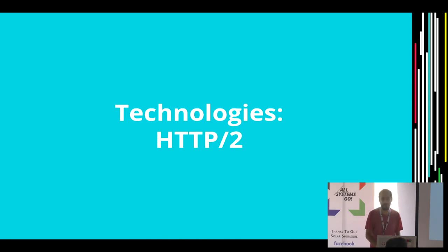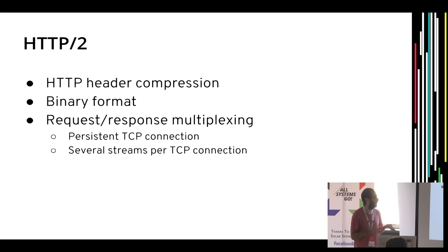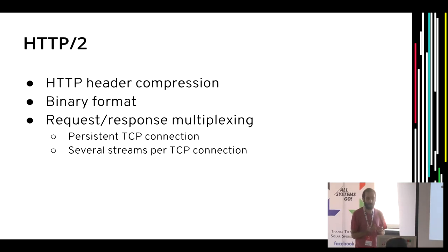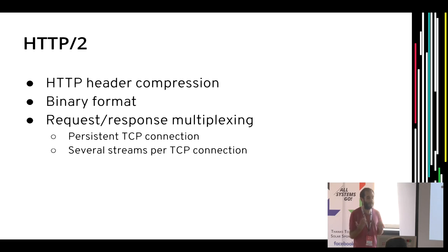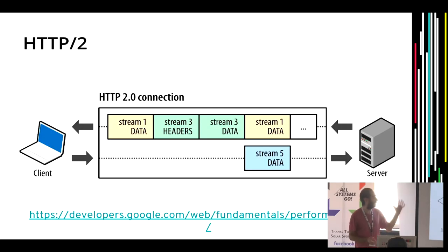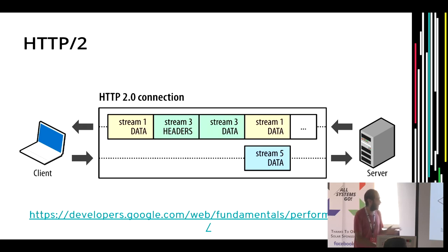HTTP/2 has some key differences from HTTP/1: it provides header compression for efficiency, uses a binary format, and most importantly for us, it has request-response multiplexing. That means with a single TCP connection you can have several HTTP connections — you don't need multiple TCP connections like with HTTP/1. You have an HTTP/2 connection which is a TCP connection between client and server, and then different streams can carry totally different data, reusing the TCP connection without redoing the handshake or HTTPS negotiation.